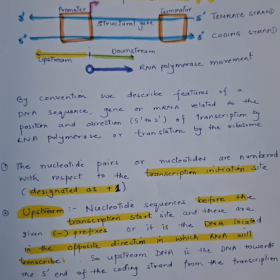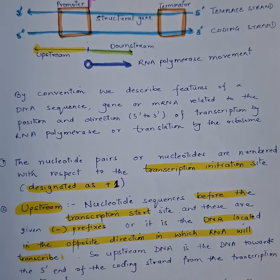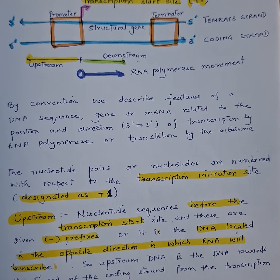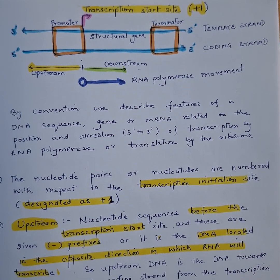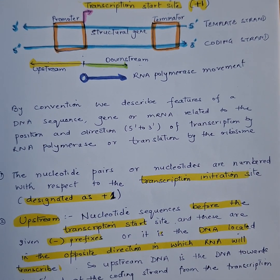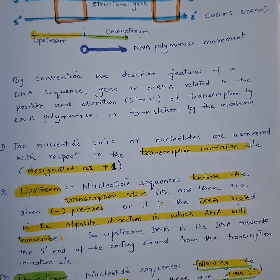The nucleotide pairs or nucleotides are numbered with respect to the transcription initiation site, as you can see in the diagram, which is designated as +1. First, let's talk about the upstream.